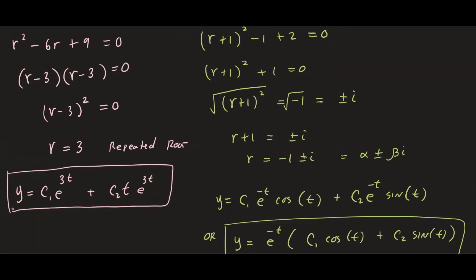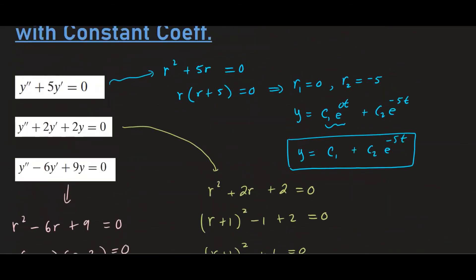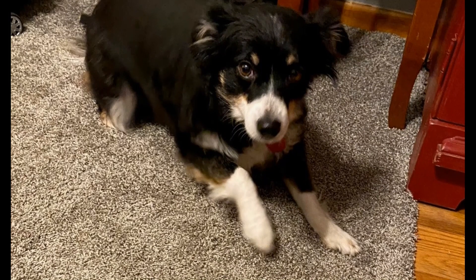All right. So I hope these three examples helped you understand the three different scenarios you can have for a differential equation that is second order and the characteristic has three different types of roots. All right, I hope this helps. See you next time. Bye.